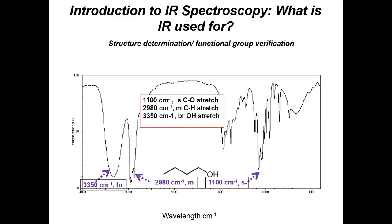Here's a simple alcohol example: at 3350 you see the broad O-H stretch, at 2980 the alkyl stretch indicative of the carbon chain, and at 1100 the C-O single bond stretch. This infrared tells us it's an alcohol, but we don't know the connectivity — we don't know it's primary. An NMR would prove it's primary because you could tell what's connected to what and which carbons are adjacent.